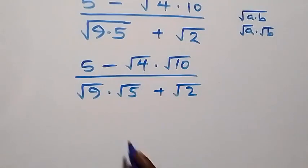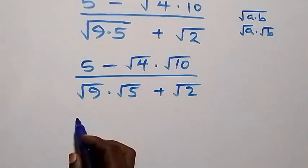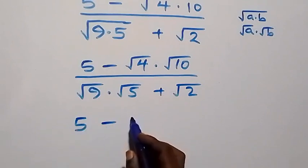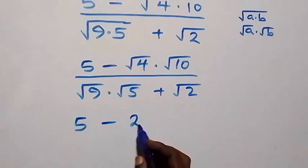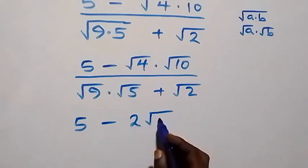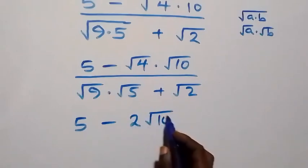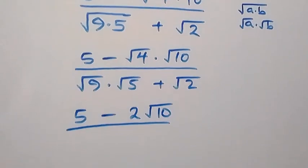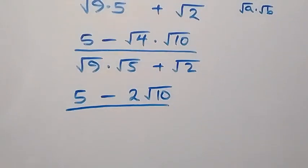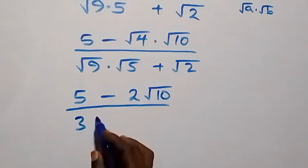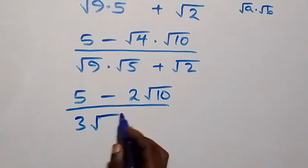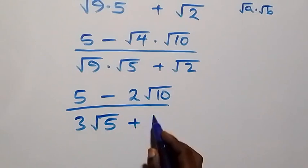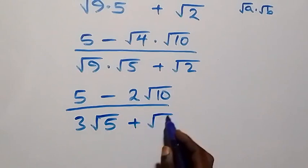This simplifies to five minus root four — which is two — times root ten, then divided by root nine — which is three — times root five, plus root two.